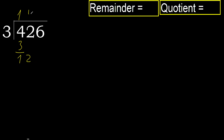3 multiplied by 4 is 12, which is not greater. Subtract: 12 minus 12 equals 0. Bring down 6.